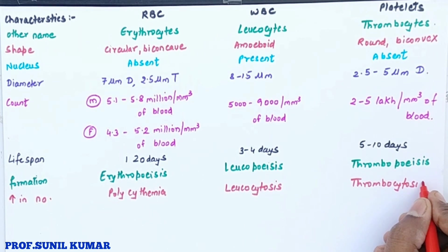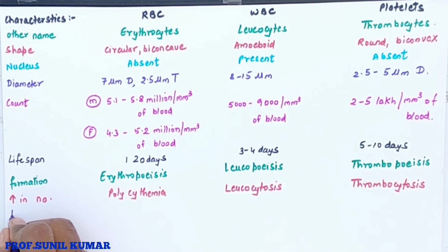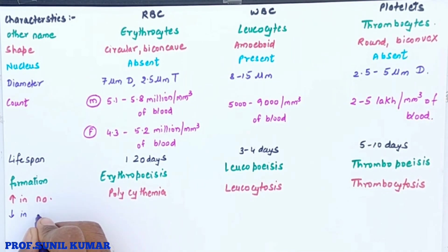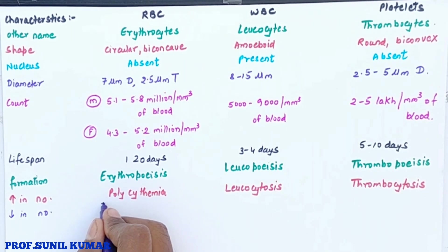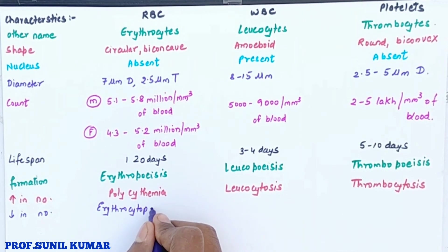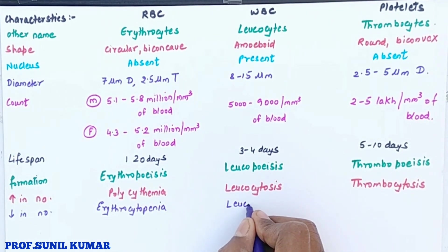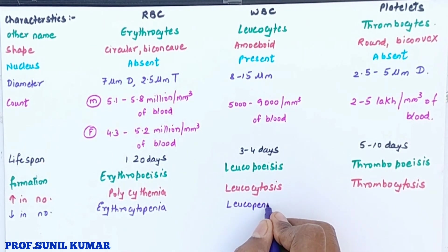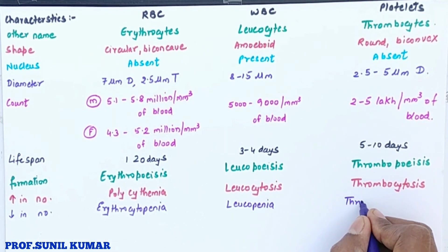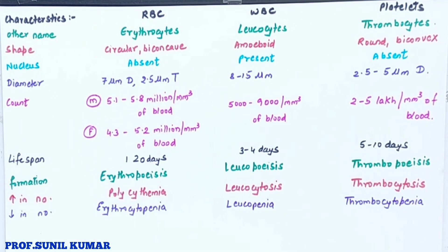Leukocytosis can also be called leukemia, or blood cancer. If there is a lower number of RBCs it is called erythrocytopenia, a lower number of WBCs is called leukopenia, and a lower number of platelets is called thrombocytopenia. The suffix 'penia' means less — a deficiency in the required cells.